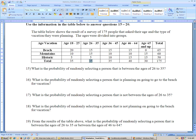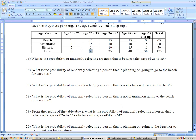19, what is the probability of selecting a person that is between the ages of 26 to 35 or 46 to 64? Well, add the two together. 26 to 35 would be 35. 46 to 64 is 40. Add those together, you get 75 out of 175.